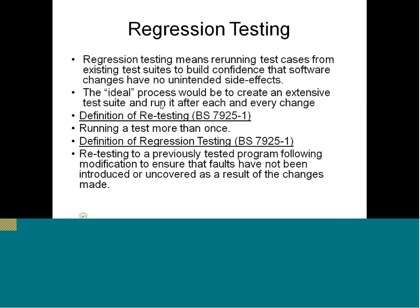The ideal process is to create an extensive test suite and run it after each and every change, so that changes in the system do not require reworking the test suite. The test suite should remain stable across changes within the scope of the program. Re-testing is simply testing again; regression testing means that previously-tested software has been modified to fix identified faults, and we re-execute the same tests to verify the fixes and ensure no new side effects.